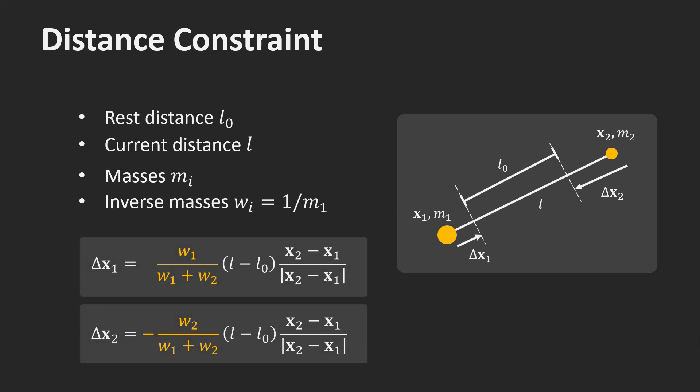Here you see the formulas for the two correction vectors. They are quite simple. The vector x2 minus x1 divided by its length is a normalized vector pointing from particle 1 to particle 2. Multiplying it with the difference L minus L0 creates a correction vector which enforces the distance between the particles to be L0. This vector is then distributed between the particles proportional to their inverse masses.